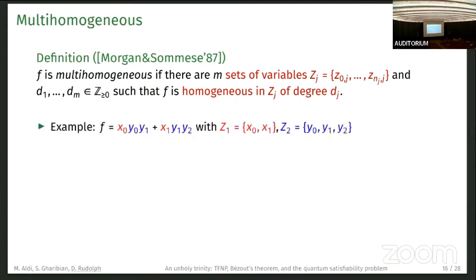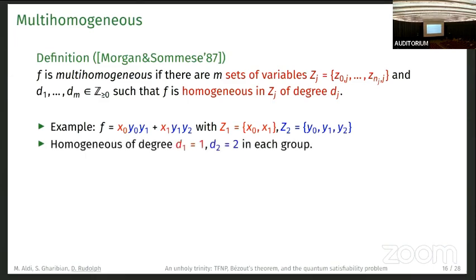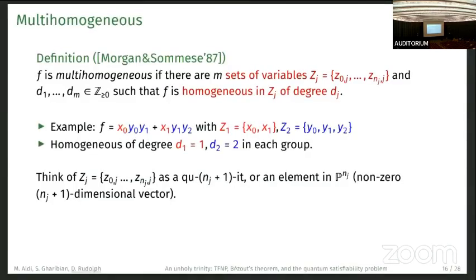This is an example. We have two variable groups here, the blue ones and the red ones, Z_1 and Z_2. F has homogeneity degree one in Z_1. If you view the blue ones as constants, then you can see F is linear. If you view the red ones as constants, F is quadratic.